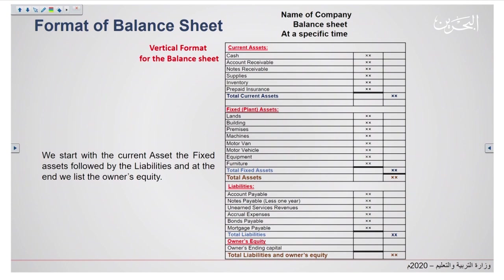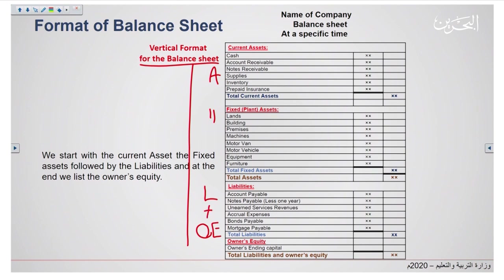The second format of the balance sheet is the vertical format, where we list the assets, then the liabilities, then the owner's equity all in one column. The same formula applies: assets equal liabilities plus owner's equity. We make sure that total assets — both current and fixed — are equal to the total of liabilities with owner's equity. If these totals are equal, our balance sheet is balanced and we have successfully applied this formula.